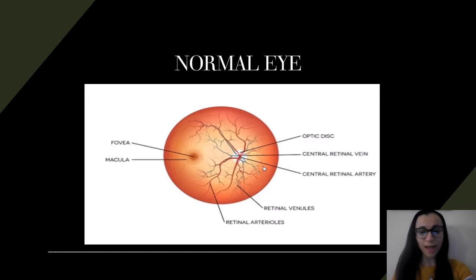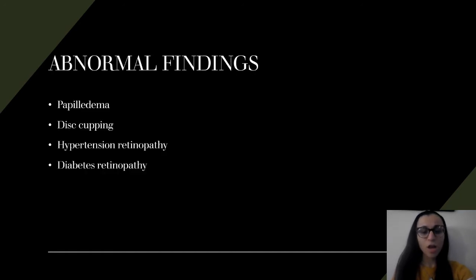Now we're going on to abnormal findings. Number one is papillary edema. As the name says edema, so think of swelling. So it's swelling of the optic nerve. Causes of this are increased intracranial pressure, so think of stuff that could increase that: tumor, abscess, bleeding.